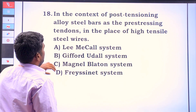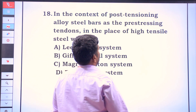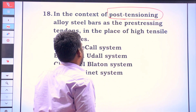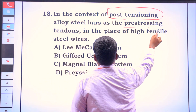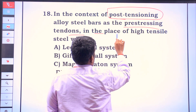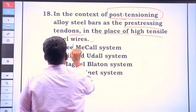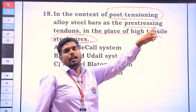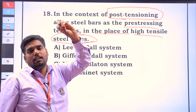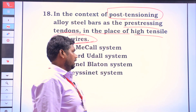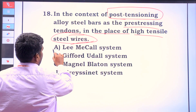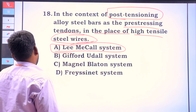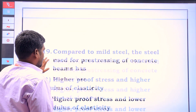In the context of post-tensioning, alloy steel bars are used as pre-stressing tendons in place of high tensile wires. High tensile wires are used in post-tensioning pre-stressing. The method is the Lee McElroy System.